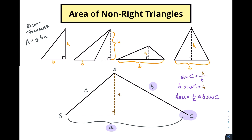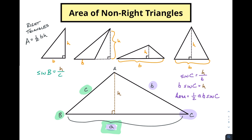But what if we had a different combination of sides? Let's imagine we have side C, angle B, and side A. Using the same process: if we have angle B with our imaginary height and right triangle, sine B equals height over side c. Rearranging: h = c sin B. So the area is one-half A times c sin B.